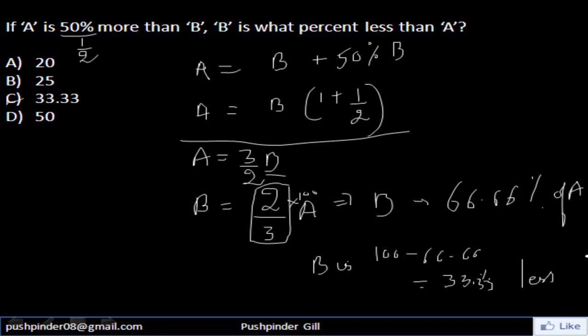If A is 50% more than B, B is what percent less than A? So if A is 50% more than B, the equation that should come into your mind is that A equals 3/2 B. That means B equals 2/3 A. That means 2/3 is equivalent to 66.66%, which means it's 33.33% less than A.